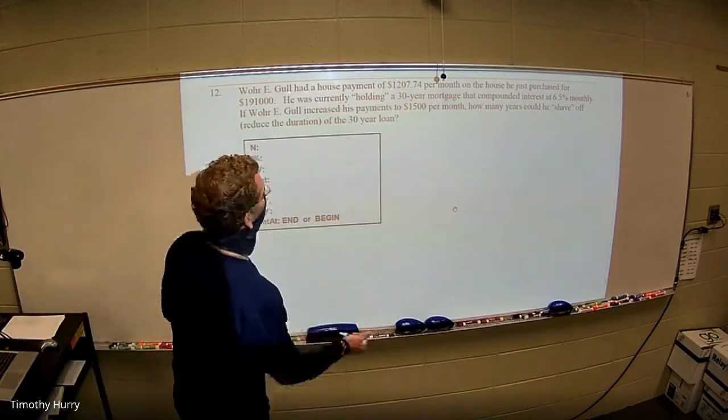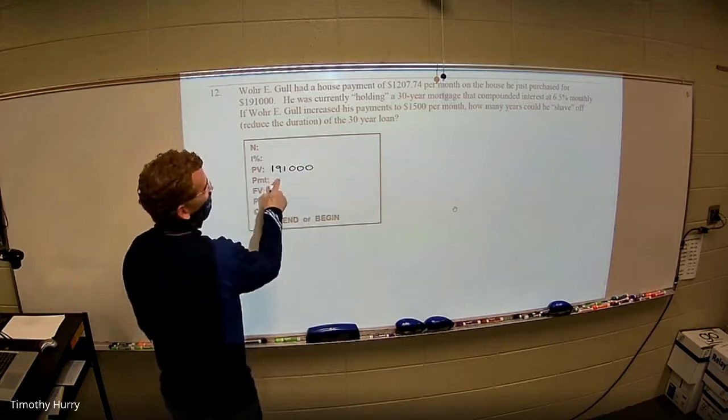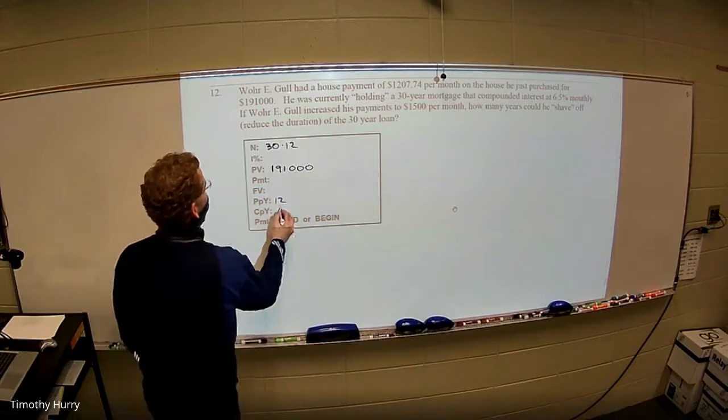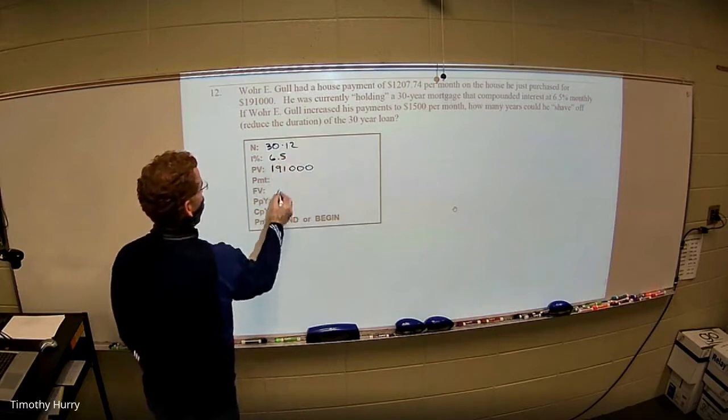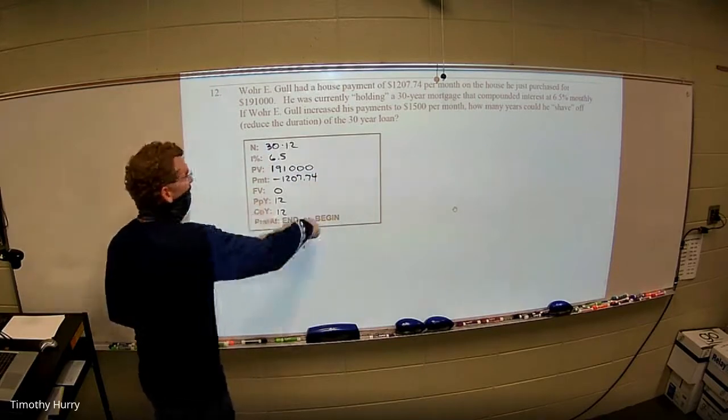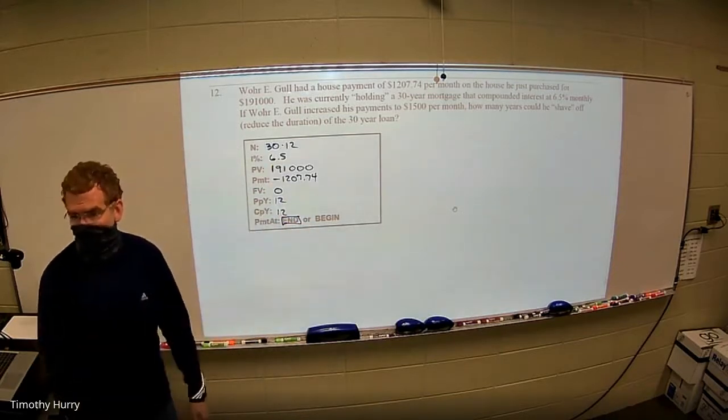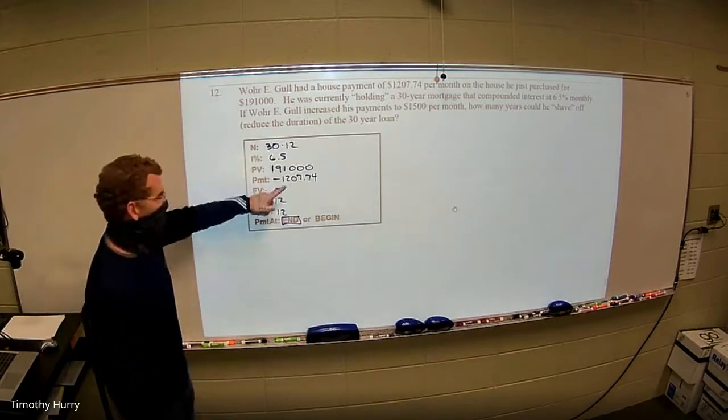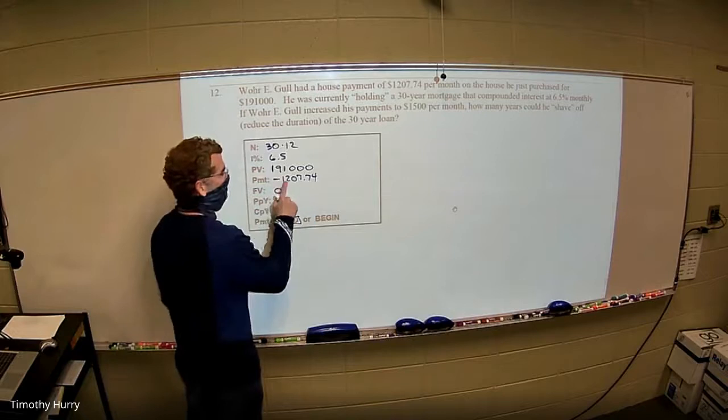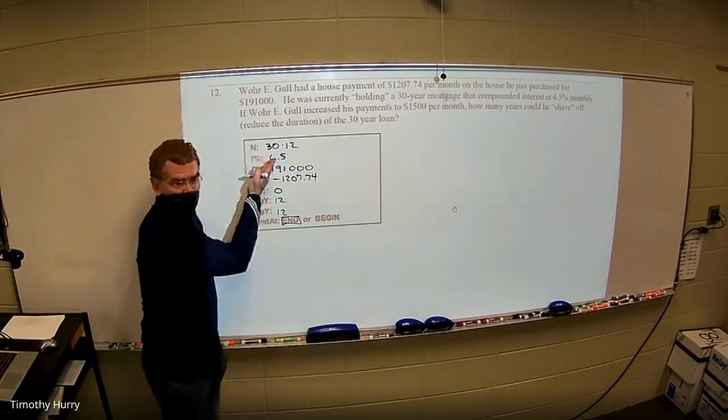If you currently have a $191,000 present value on his mortgage. So this is what he's owing. He's been paying $1,207 on a 30 year mortgage monthly, compounded at six and a half percent monthly. Future value is going to zero. And right now he's been paying $1,207.74. So this would be the math and he's paying it at the end, each payment at the end. So this would have been the math on this current situation. So like if you are calculating, hey, how long does it take to pay this off at $1,207.74? It would have taken 30 years. So the question is, what happens when you change that to $1,500?